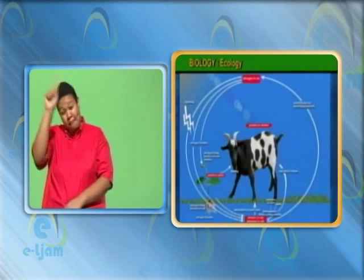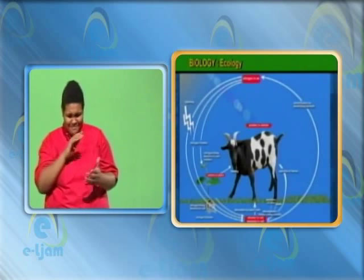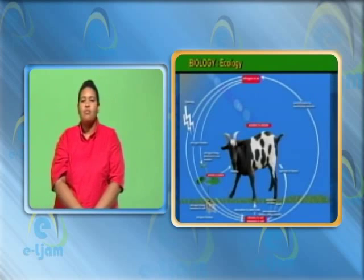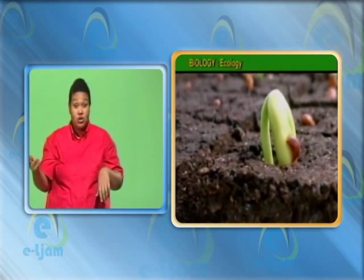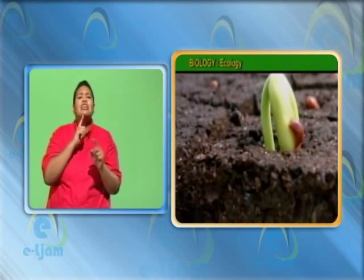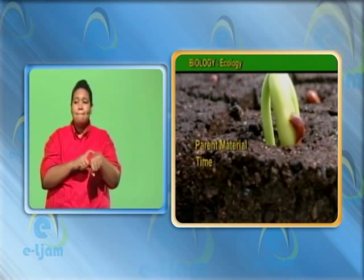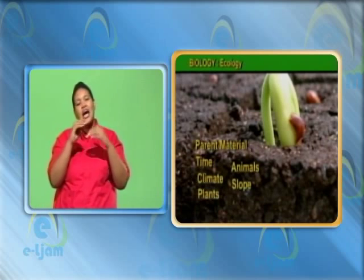The nitrates will enter plants and animals; however, nitrogen may be returned to the soil by nitrifying bacteria and returned to the air by denitrifying bacteria. Soil is a natural resource that is a product of the interaction of several factors such as parent material, time, climate, plants, and animals, and the degree of slope.